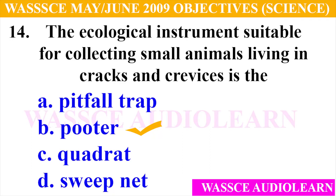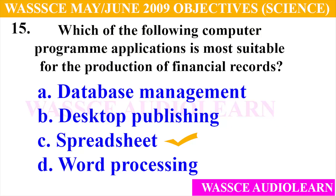Question 14: The ecological instrument suitable for collecting small animals living in cracks and crevices is — A. Pitfall trap. And the answer is B, pooter. The ecological instrument suitable for collecting small animals living in cracks and crevices is the pooter.